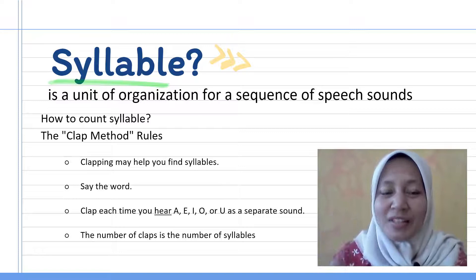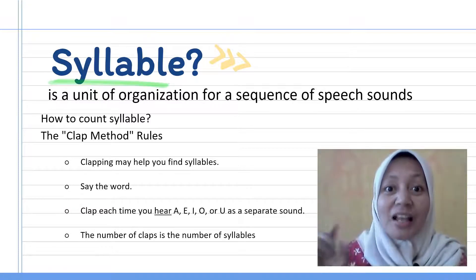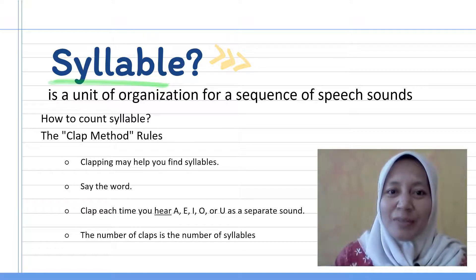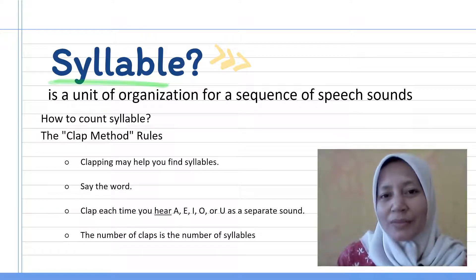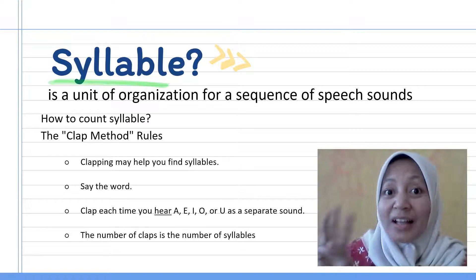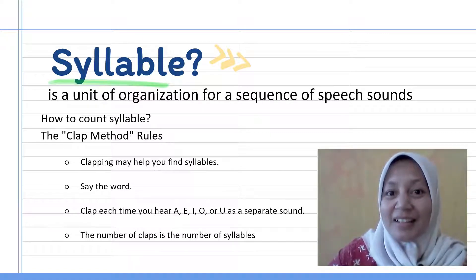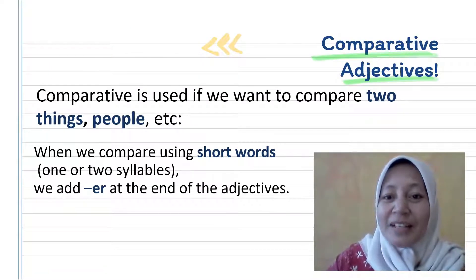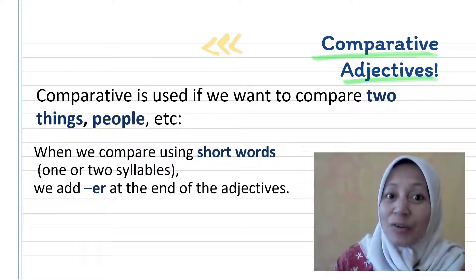Heavy — two syllables. Hot — one syllable. Clever — two syllables. What about beautiful? Say the word: beautiful — three syllables. It's so easy to count syllables! Now, comparative adjectives: when we compare two things or people, we use comparative adjectives.